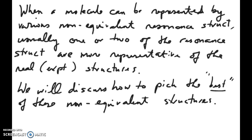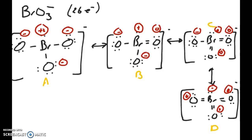Today we're going to talk about how to pick the best resonance structures if you have a set of non-equivalent resonance structures. We talked about this idea in prior videos — these structures are not the same as each other because they have different formal charges. Bromate ion is the example we looked at before, where the formal charge of the bromine atom changes as you draw the various resonance structures.